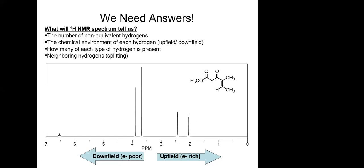A student answers two. The instructor clarifies: you have two signals in one region, two more in another, and one more — a total of five signals. Each peak somewhere on the spectrum is called a signal. Five signals means five types of hydrogens in that molecule. We know how many non-equivalent hydrogens are present by the number of signals.